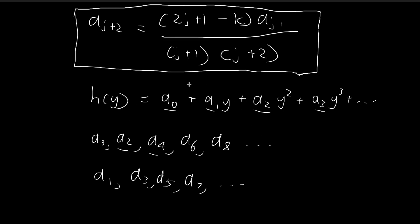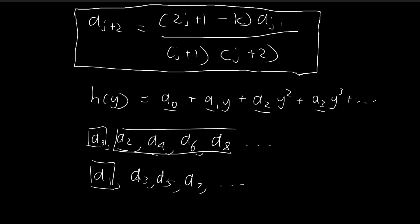So it seems like we're done. We can set an initial condition and use that to deduce what a0 and a1 should be, and then use the recursion formula to deduce the rest of the constants. It seems like we have already solved the Schrödinger equation.